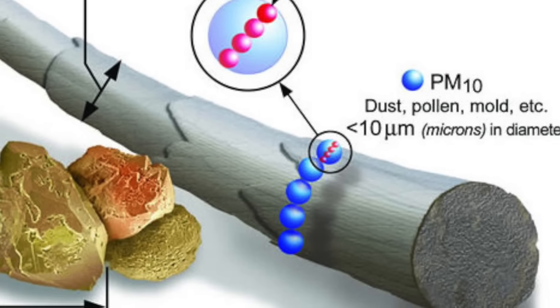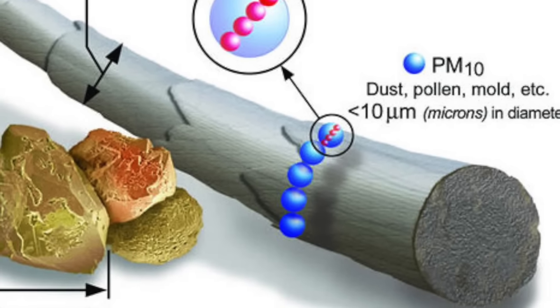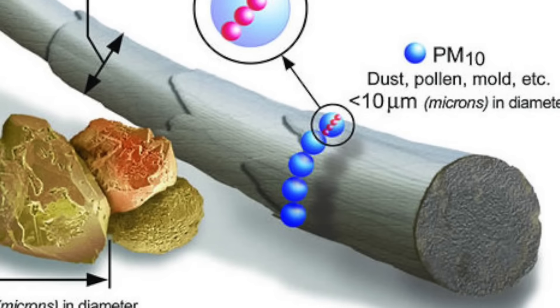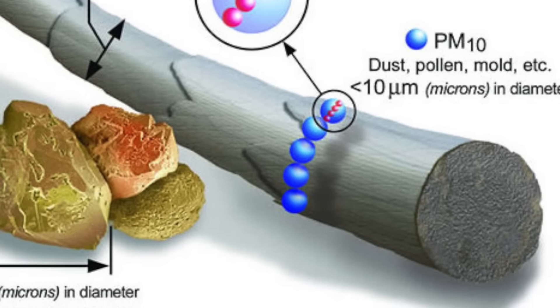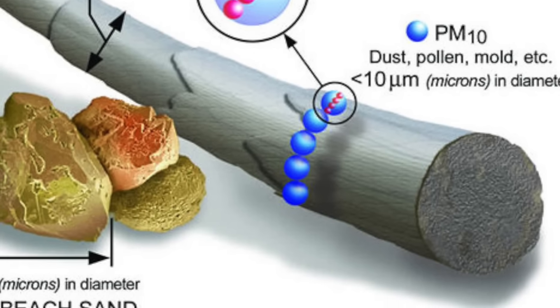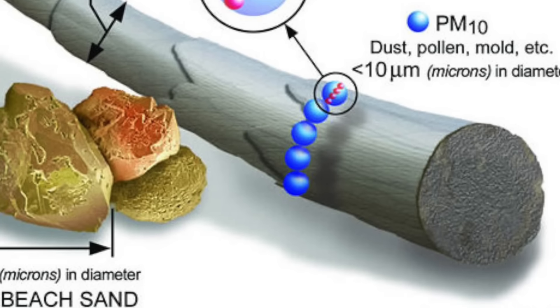There are different ways of finding this data. You can find different websites that report pollution data for different cities, and most report PM 2.5, which is worth noting. Those are the particulate matters that can enter your nose and cause asthma or similar issues, which is why people use air purifiers.